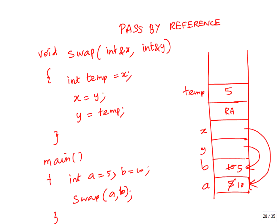If you are worried about people changing the values, you can put a const qualification. Once you say const, we can use it for read-only — you cannot write to the values. It's like laminating my paper and then giving it to you. The last parameter passing mechanism is pass by pointer. This was in C itself. We explicitly say pointer. Since we explicitly say pointer, you cannot pass a and b directly — you have to pass address of a, address of b. Those become the pointer values.